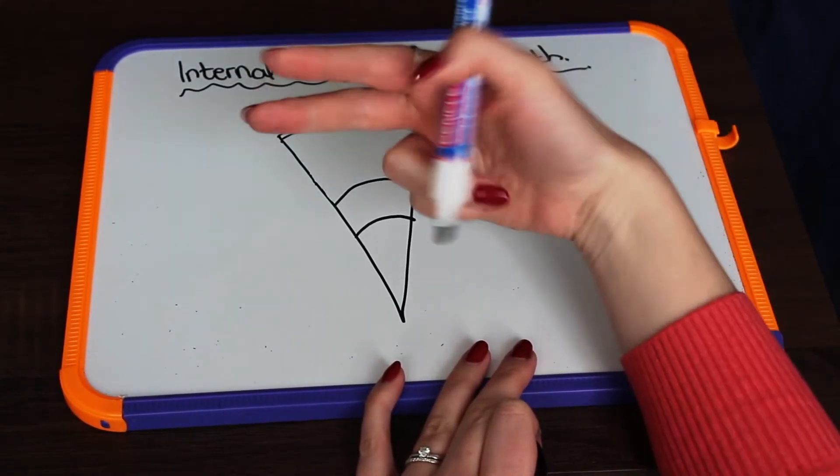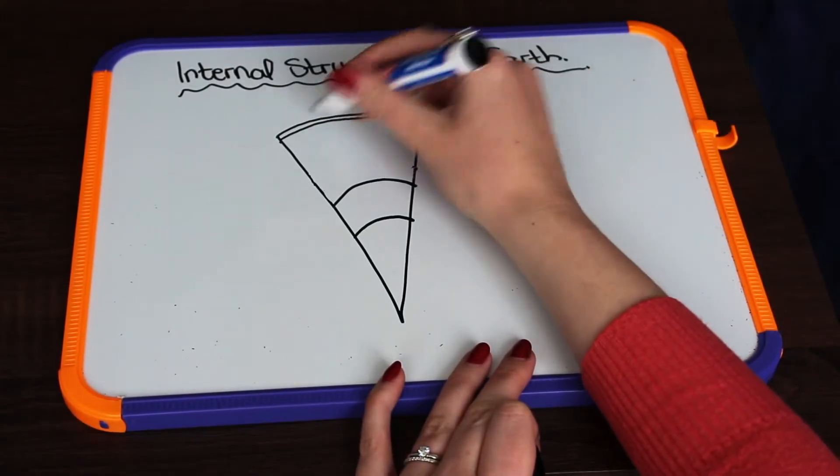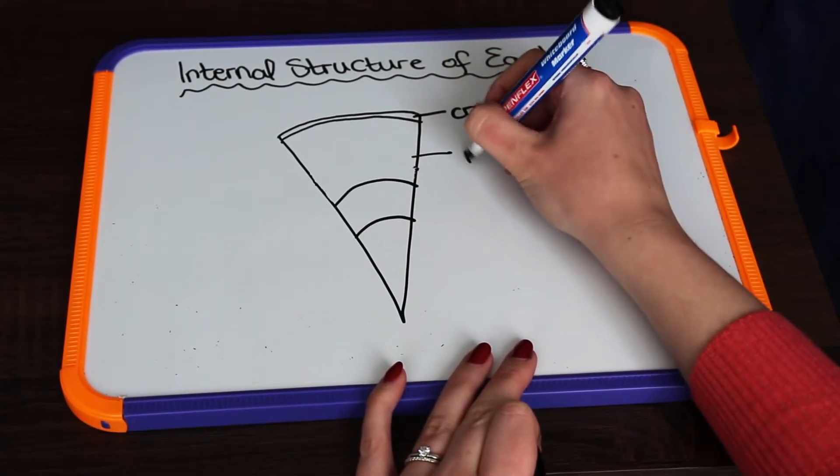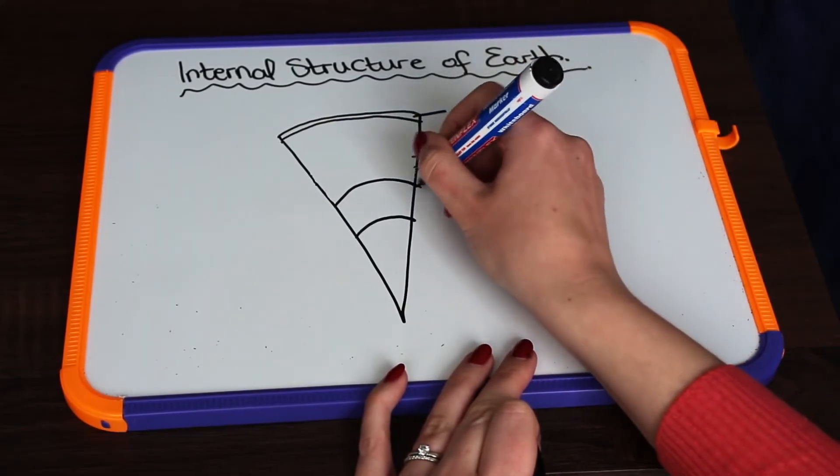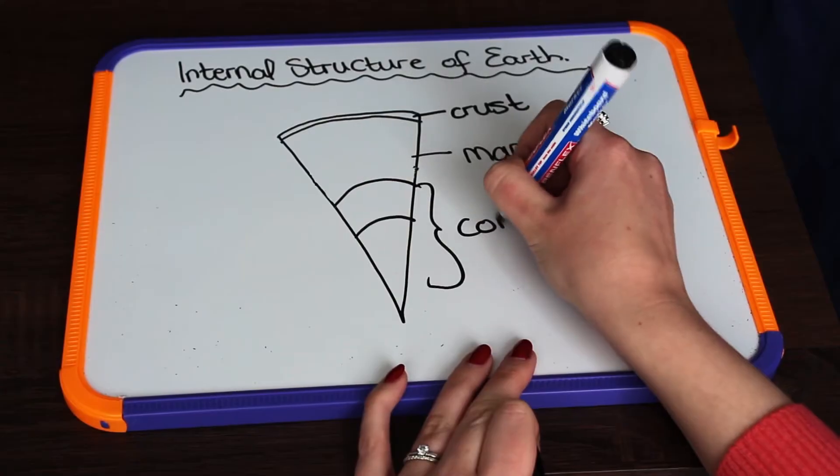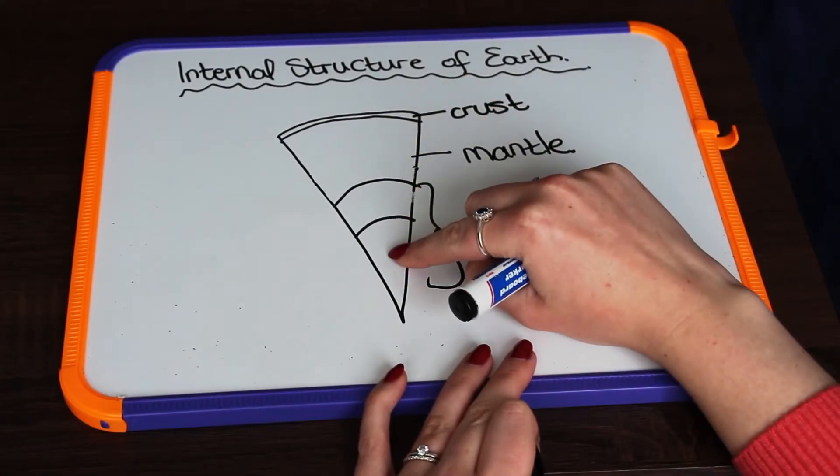We get two different types of crusts: the continental crust and the oceanic crust. It is our thinnest layer. Then underneath that we have our mantle, and then underneath that we have our core, which is then broken up into our outer core and our inner core.